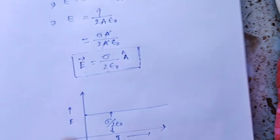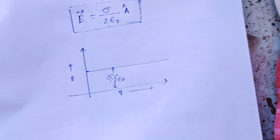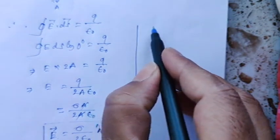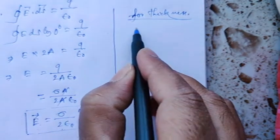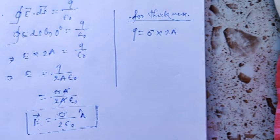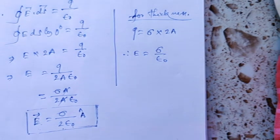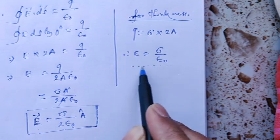Now what about the case for an infinite plane sheet that has some thickness? In case of this thickness, one thing changes: the charge value q equals sigma times 2A (not just A). Therefore the electric field will change to sigma by epsilon naught — the factor of 2 cancels. This electric field E = σ/ε₀ is also known as Coulomb's law. In higher studies you will encounter this.